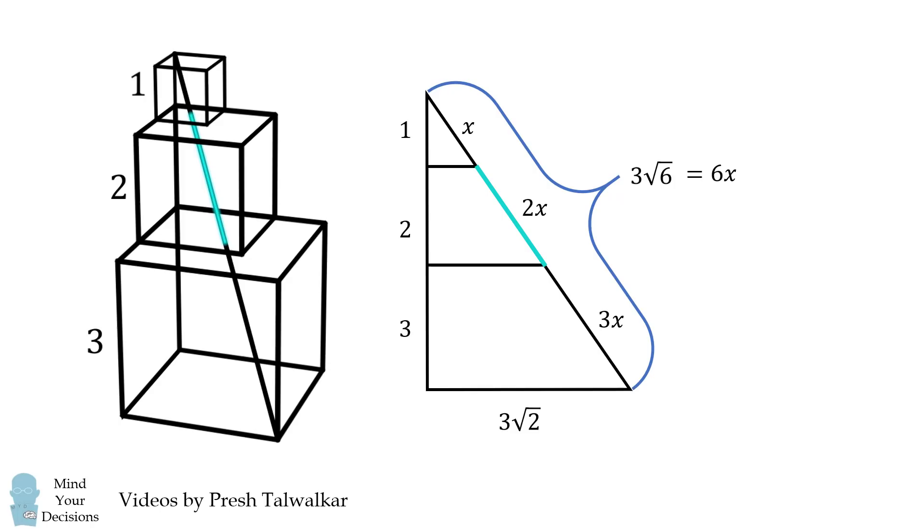Consequently, we divide both sides by 3 to get that 2x is equal to the square root of 6. And that's the answer.